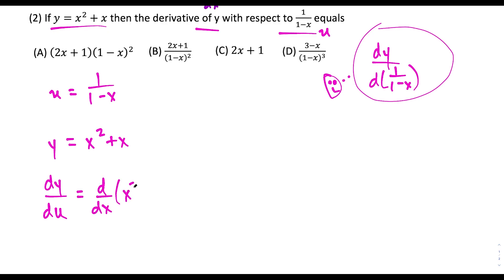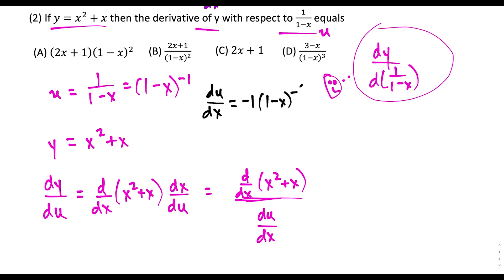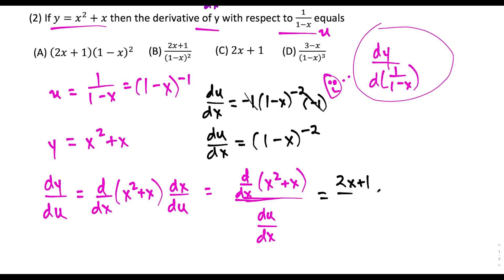To find dy/du I use the chain rule: take the derivative with respect to x of x² plus x, then tack on dx over du. Rewriting, that's the derivative with respect to x of x² plus x, divided by du/dx. To find du/dx, I rewrite u as (1 minus x) to the negative one and apply the chain rule: negative one times (1 minus x) to the negative second, times negative one for the inside derivative. So du/dx equals (1 minus x) to the negative second. The derivative of the top is 2x plus 1, and du/dx on the bottom is (1 minus x) to the negative second.